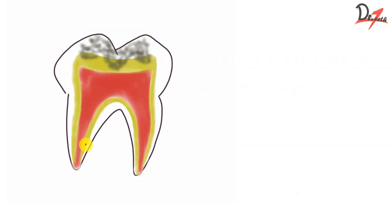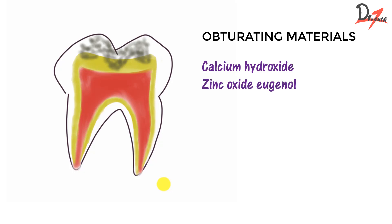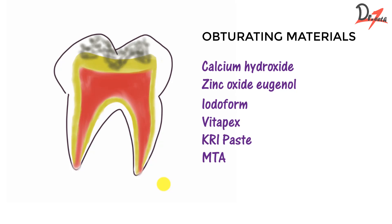Regarding resorbable obturating materials used in primary teeth — commonly used materials are calcium hydroxide, zinc oxide eugenol, eidoform, Vitapex, KRI paste, and MTA, which is mineral trioxide aggregate.